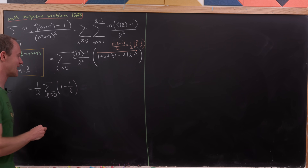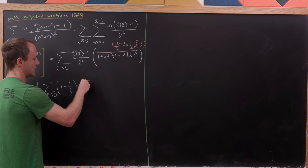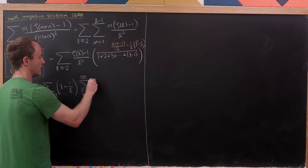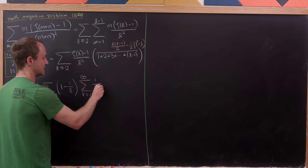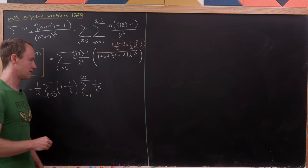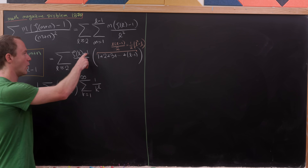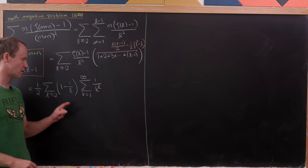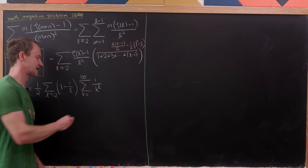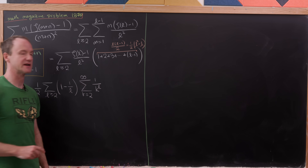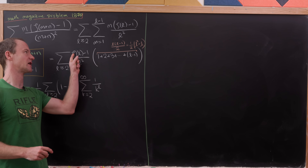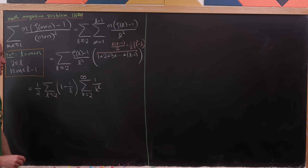Let's recall what zeta of l is: it's the sum as k goes from 1 to infinity of 1 over k to the l — the Riemann zeta function evaluated at l. Now we need zeta of l minus 1. We can subtract 1 from zeta of l simply by starting the index k at 2, because when k equals 1 the term equals 1. That's essentially removing the first term.